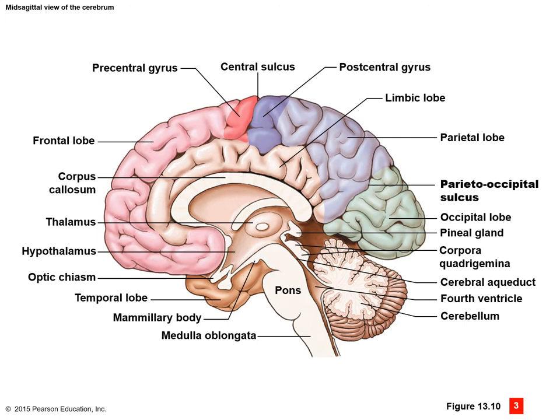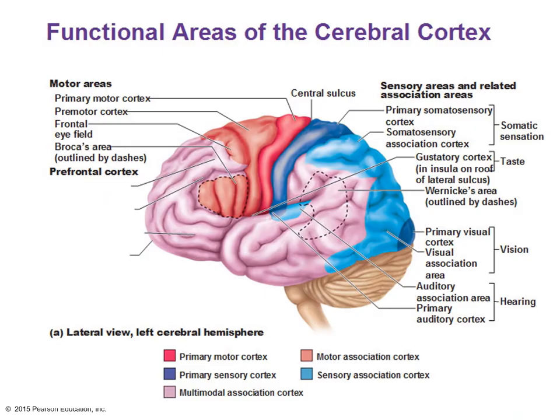Here we can see a better view of the parieto-occipital sulcus separating the parietal and occipital lobes. Now, these are some of the functional areas of the cerebral cortex. The motor cortex in the precentral gyrus deals with voluntary motor commands. The sensory cortex in the postcentral gyrus receives general somatic sensory information — touch, pressure, pain, temperature, and proprioception. The gustatory cortex is found within the postcentral gyrus and deals with taste, while the olfactory cortex is found in the temporal lobe and deals with smell.